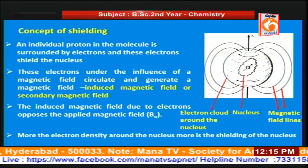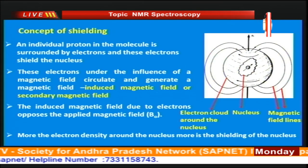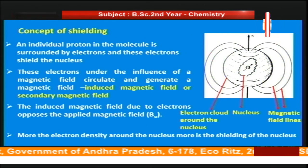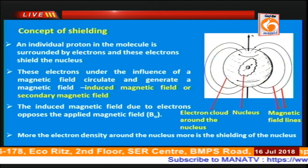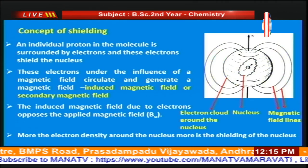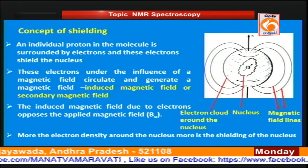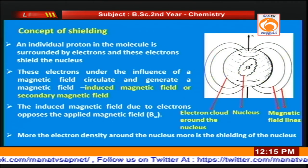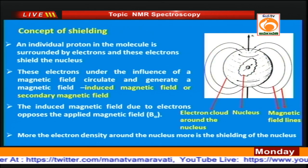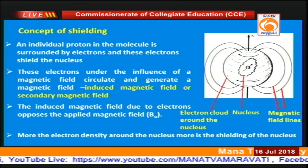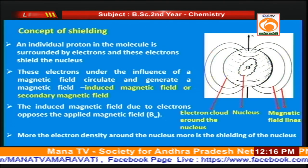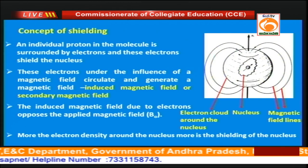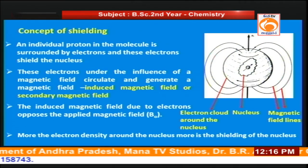Now I will explain the concept of shielding. Whenever a proton is kept in a magnetic field B₀, based on the field strength B₀ it will undergo precessional motion. But we cannot find a naked or isolated proton in a molecule, because in a molecule the proton will be surrounded by bonded electrons. The bonded electrons will shield the nucleus from the external magnetic field.